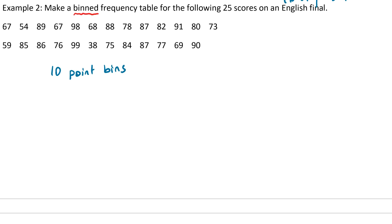I'm going to have two columns. I'm going to have score and I'm going to have the frequency. So if we want 10 points, then our first range could be 90 to 99. Because, by the way, 99 is our highest and 38 is our lowest. So we need to make sure that we go as high as 99 and as low as 38, otherwise some of those scores are going to be left out.